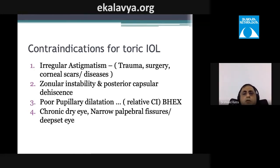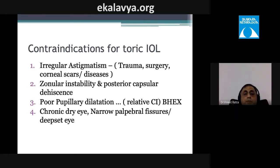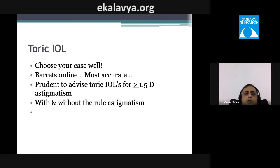Contraindications for toric IOLs include irregular astigmatism from trauma, surgery, corneal scars or disease, and zonular instability or posterior capsular issues. Relative contraindications include pseudoexfoliation, poor pupillary dilation (though the Bhattacharji ring helps), chronic dry eye, narrow palpebral fissure, and deep-set eyes. Careful case selection is essential.